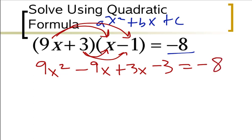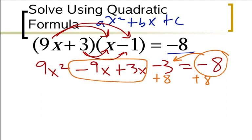This equals negative 8, and you want to be careful not to leave it equal to negative 8. I want to add my 8 over here to my negative 3, so plus 8 plus 8. I also want to combine my like terms in the middle. This rewrites to be 9x squared minus 6x plus 5 equals 0.